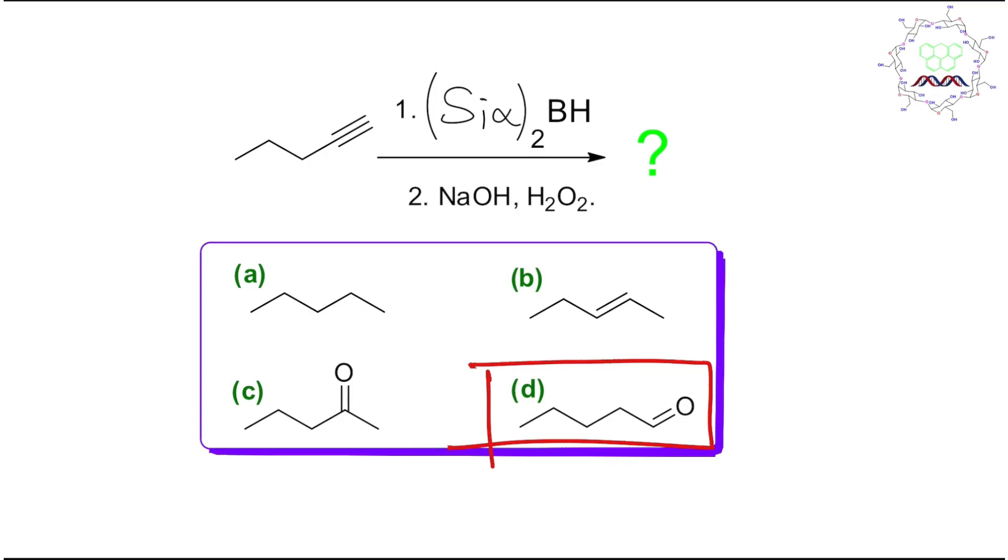Now if this question is provided in your exam in less than 30 seconds, how can you come to the right answer? First of all, you need to understand (Sia)2BH is a big bulky boron and one BH is there, so one equivalent reduction will happen. Boron prefers to remain in the less bulky side, so boron will be attached from this terminal one.